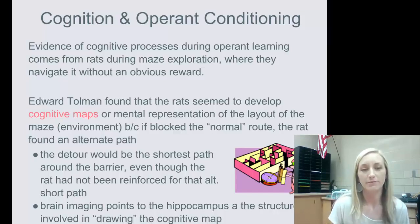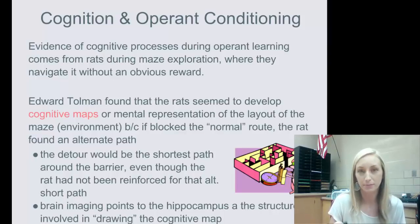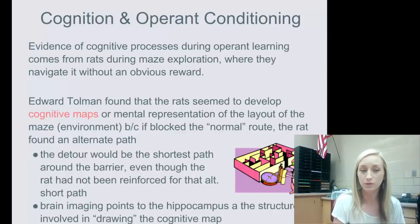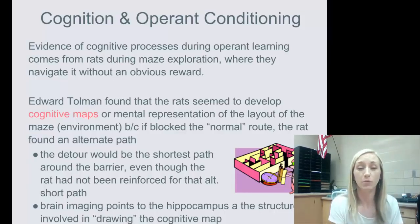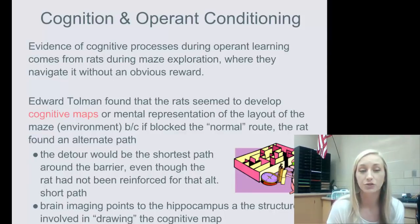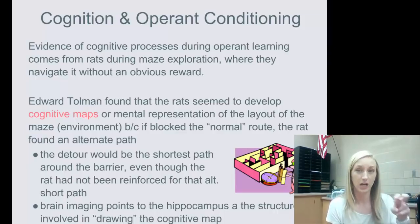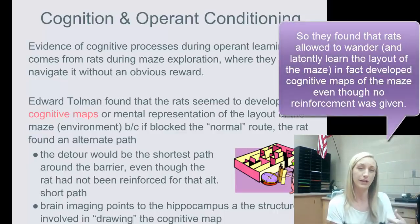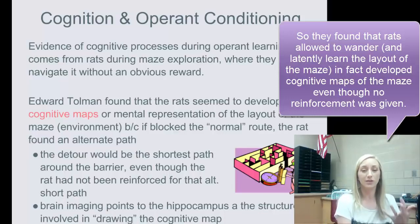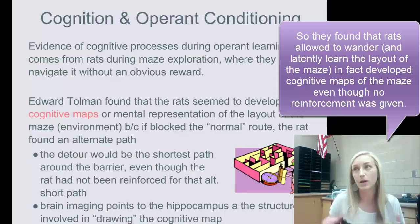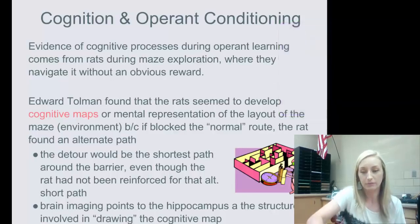With Tolman's research on cognitive maps, the detour — the different route — would be the shortest path around the barrier, even though that alternate short path had never been reinforced. Brain imaging points to the hippocampus as the structure involved in drawing the cognitive map. That's where all new learning is processed and what helps you respond in new ways to a problem.